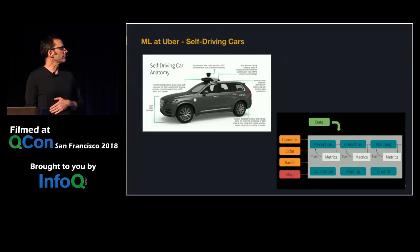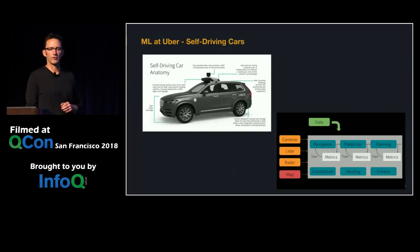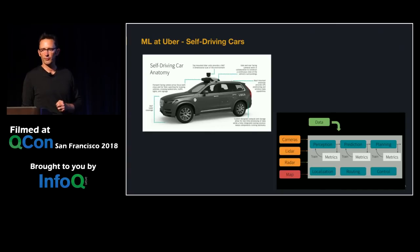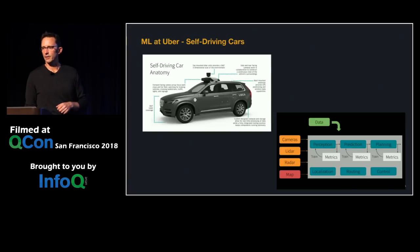For self-driving cars, the vehicles use LiDAR and cameras to understand the world around them. ML is used for object detection, finding where streets go, and looking out for pedestrians. Other parts of the system use ML for planning and route-finding. The cars are mostly operating on their own these days.